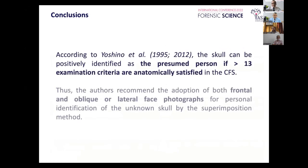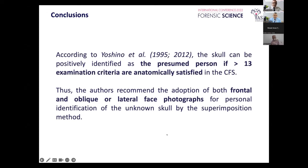An important final detail: to achieve compatibility between the skull and the picture, the landmarks that should be satisfied are at least over 13. You cannot achieve a positive identification with a match of only six, seven, or 10 anatomical morphological landmarks — they must be over 13. Also try to obtain frontal and oblique or lateral face photographs of the missing person, because when we have the skull, we are in the position to rotate it and obtain important landmarks on the lateral aspects as well.